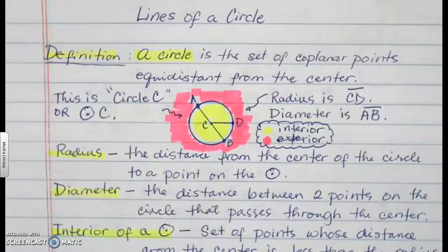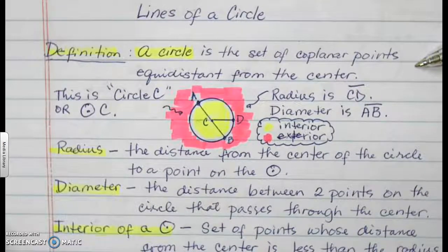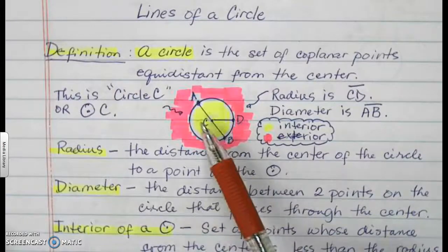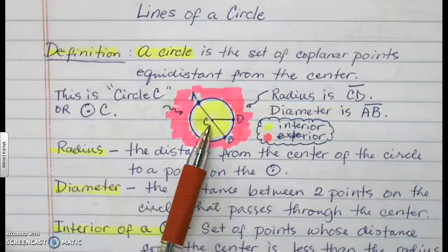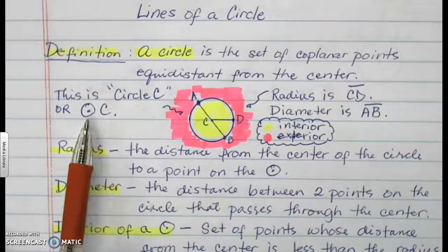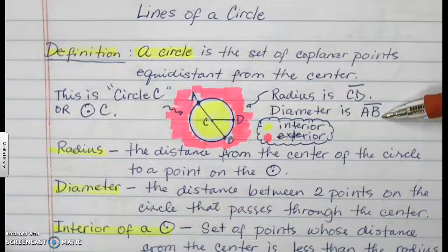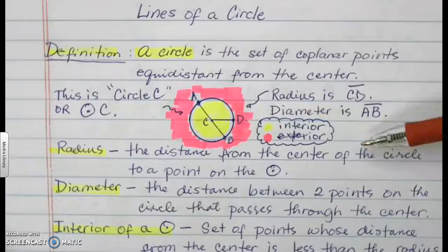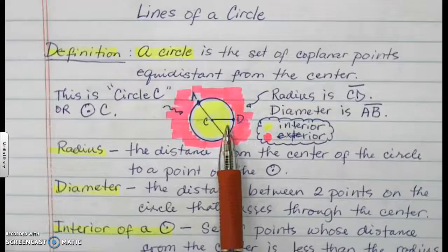Definition: a circle is the set of coplanar points equidistant from the center. The blue outline you see is the circle itself. A circle is named by its center — this is center C, so the circle is called circle C. The radius is segment CD, the diameter is AB, and interior points are all those shaded in yellow.